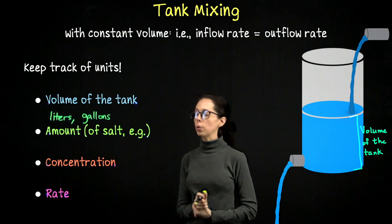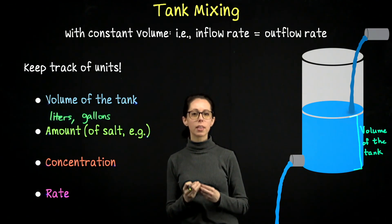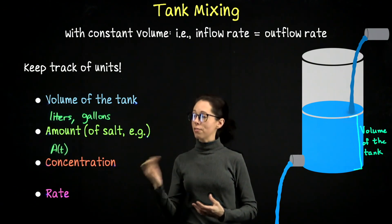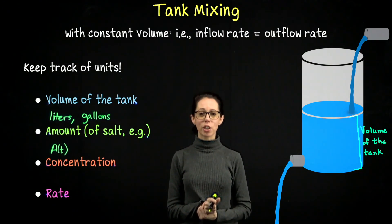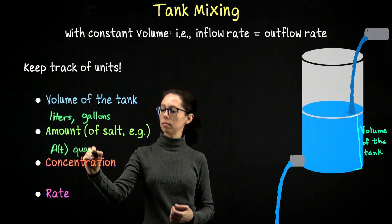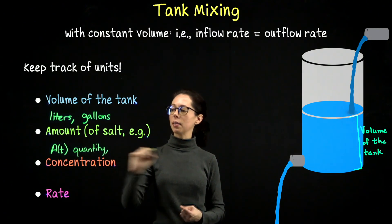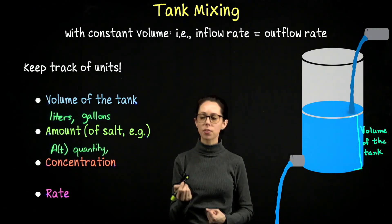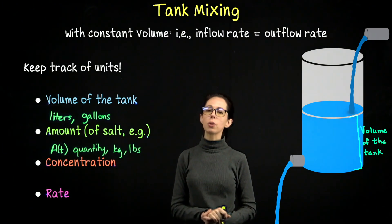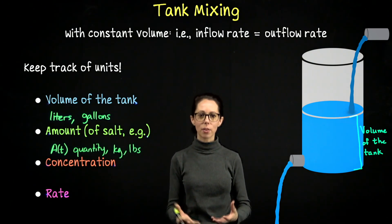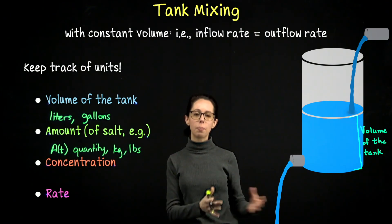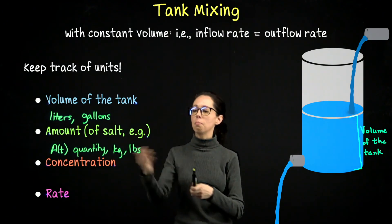The next quantity to recognize is the amount of the substance. We will call this A(t) — A for amount, T because it's changing over time. It could be something like kilograms of salt or pounds of salt — how many kilograms of salt appear in the tank, or how many pounds of sugar. It's a mass or weight, a quantity of the substance.